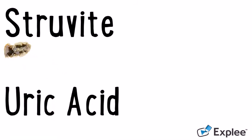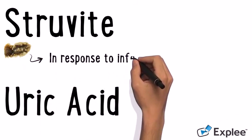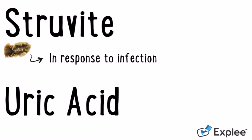Struvite stones form in response to an infection, such as a urinary tract infection, and can grow quite large quite quickly.